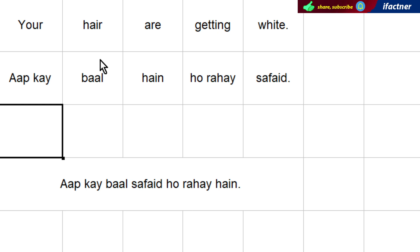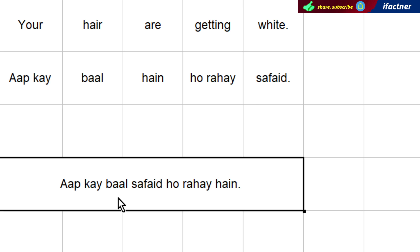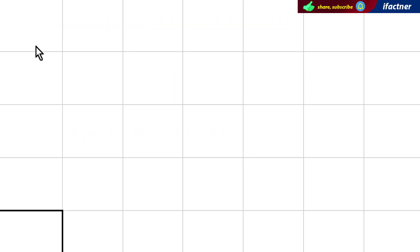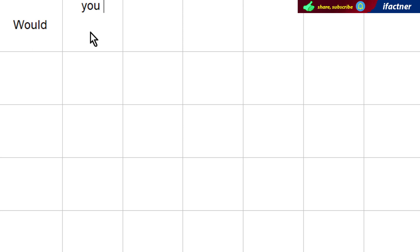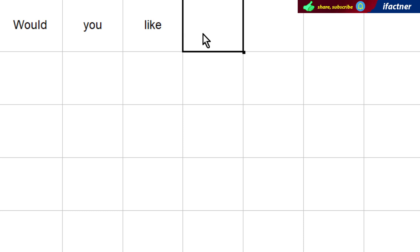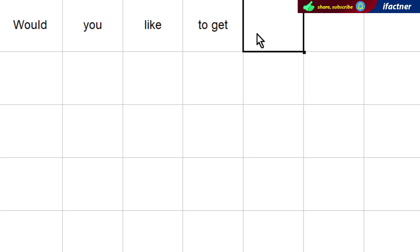'Aap ke baal safaid ho rahe hain' — your hair are getting white. 'Your hair are getting grey' — 'aap ke bale saile ho rahe hain' or similar. After saying this, the barber may ask: 'Would you like to get your hair dyed?' or 'Would you like to get your hair colored or dyed?'